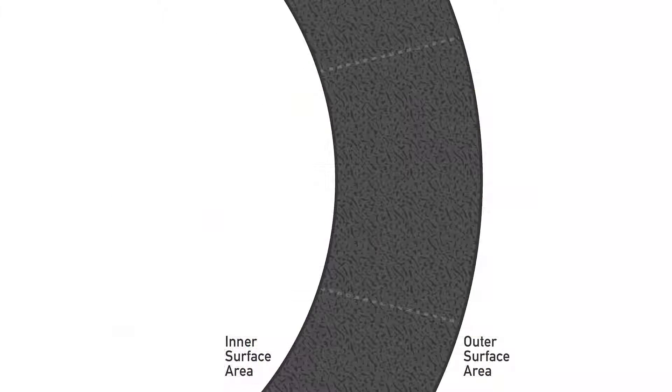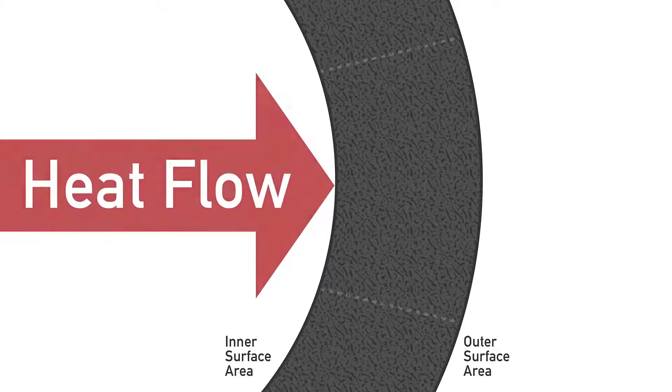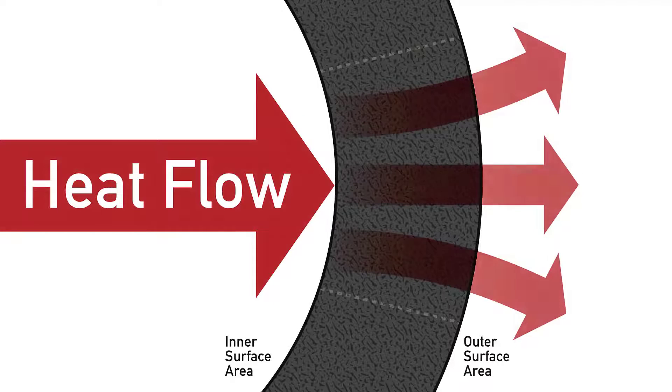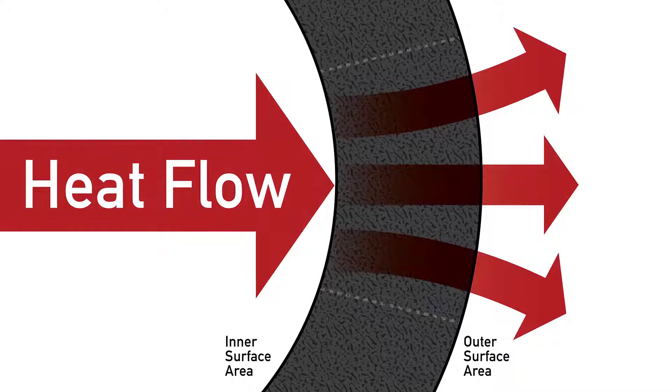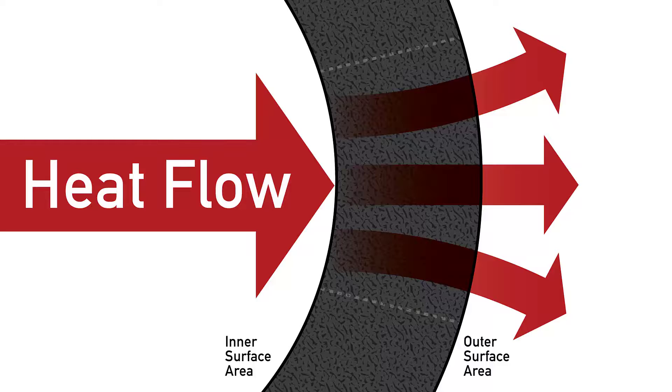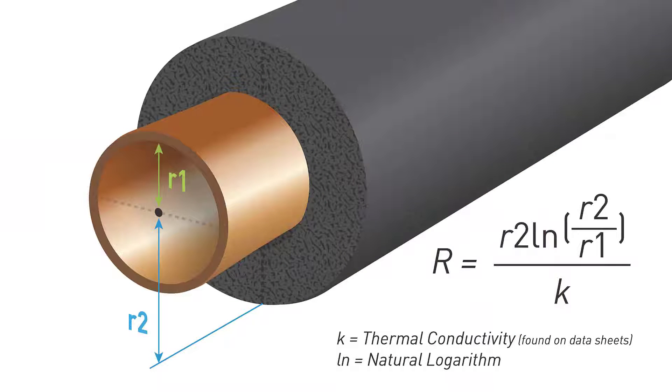Calculating a cylindrical object is a little more complicated because you must determine the equivalent thickness of the curved insulation. The heat transfer area changes through the insulation because the inner surface area is smaller than the outer surface area. Therefore, use the formula shown here. You'll notice the numerator calculates the equivalent thickness using the uninsulated pipe radius and the insulated pipe radius. This is then divided by the thermal conductivity to determine the R-Value.